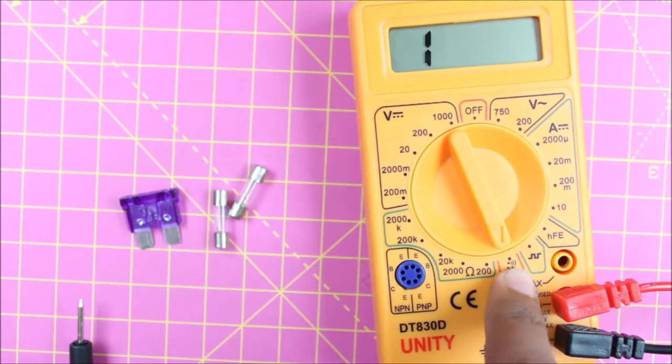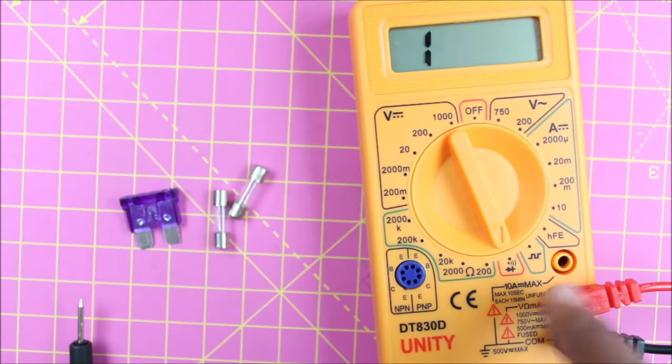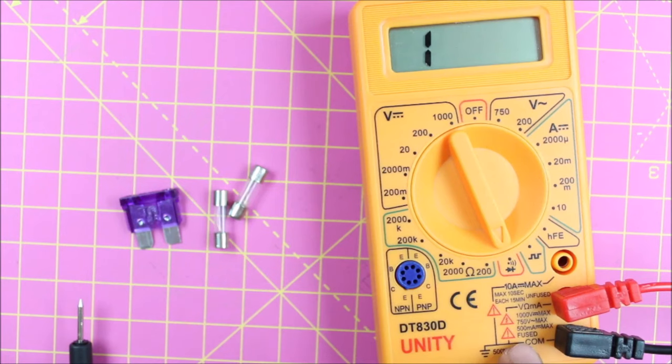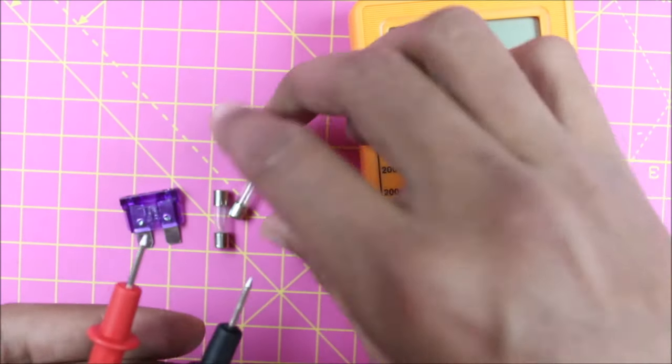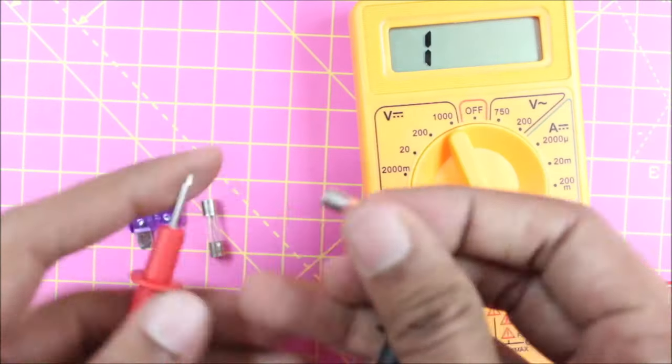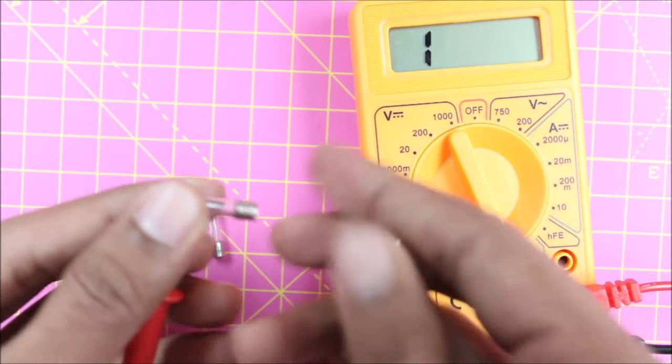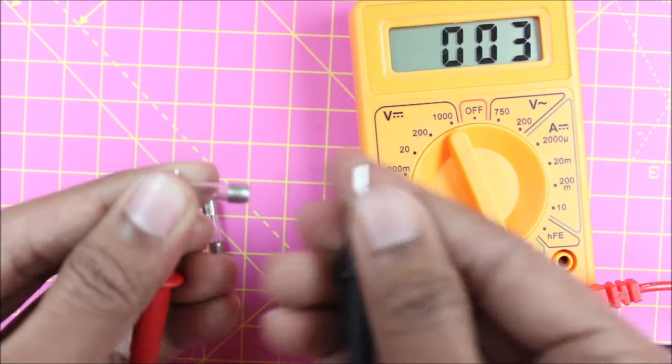Put your multimeter in continuity mode. This symbol here indicates continuity mode. The red probe should be in voltage mode, the black probe should be in COM. Then just take your multimeter leads and place them on the conductive pads of your fuse, the silver pads here. Just place them onto the leads and you'll hear a beep.